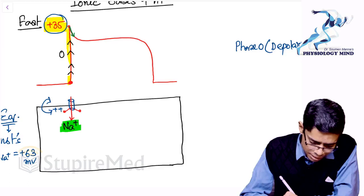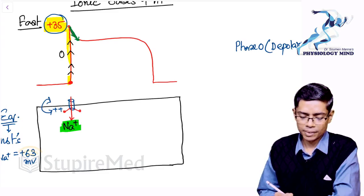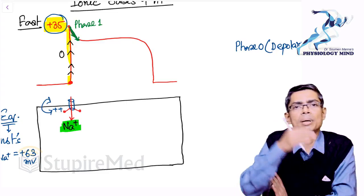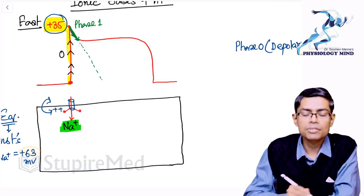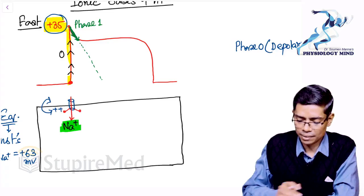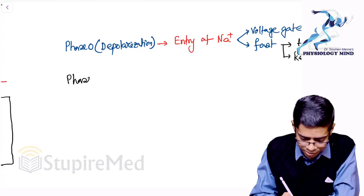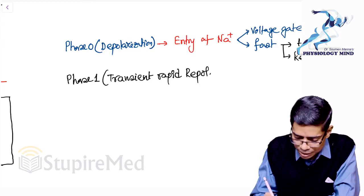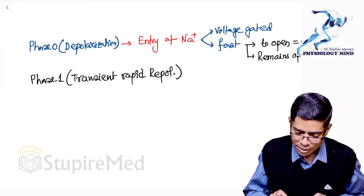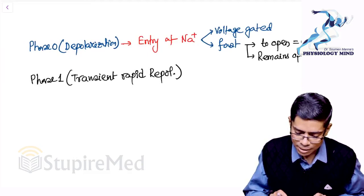Phase 0 is now complete. In Phase 1, the membrane voltage starts returning towards the RMP. This repolarization is not complete — it stops midway — so Phase 1 is called transient rapid repolarization. The membrane voltage partially returns towards RMP before stabilizing.